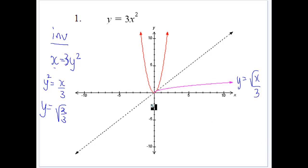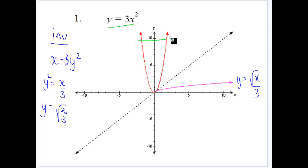Looking at some problems here. The first one is 3x squared. If we're talking about finding an inverse function for this one, we're going to have problems because 3x squared — if we notice, the function itself doesn't pass the horizontal line test. So it's a function but it won't give us an inverse function because it falls, stops, and rises.